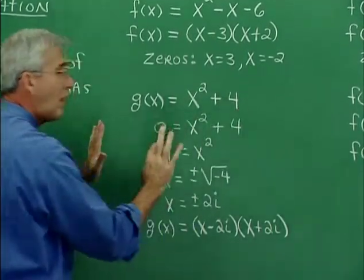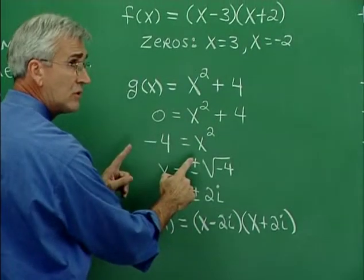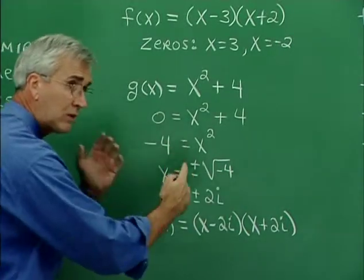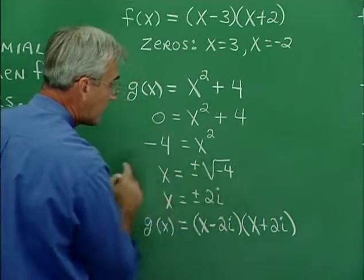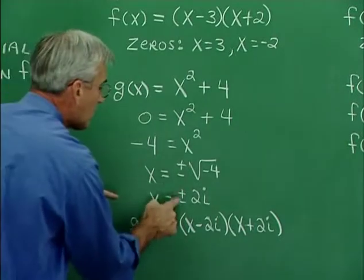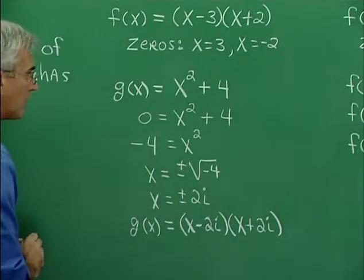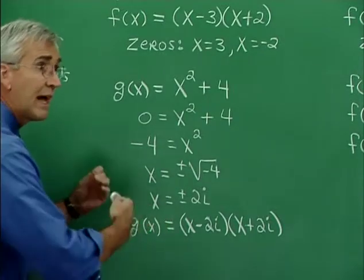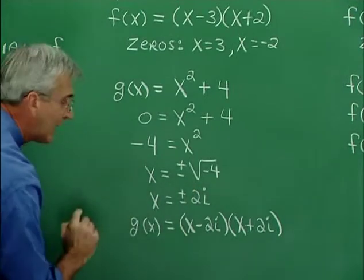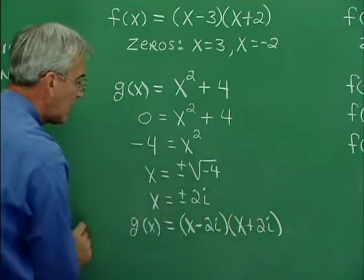Now look at x² + 4. If we want the zeros of this, we set the expression equal to zero and solve for x. Subtracting four from both sides, x² = -4, so x = ±√(-4). We're talking about imaginary numbers here as a result of taking the square root of a negative, so we have ±2i as the zeros. The factors are related to the zeros as x minus each zero: x - 2i and x - (-2i), which is x + 2i. So here are our two factors.